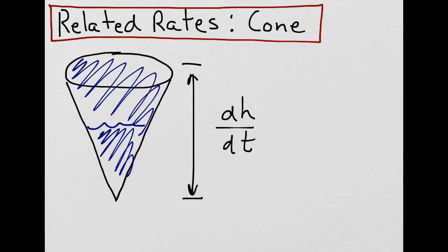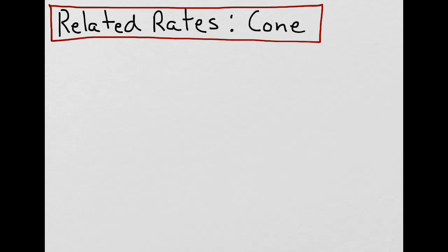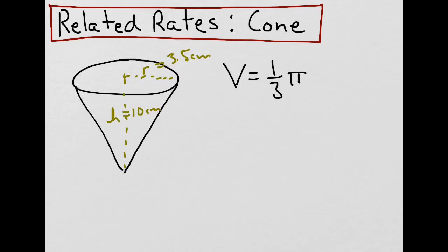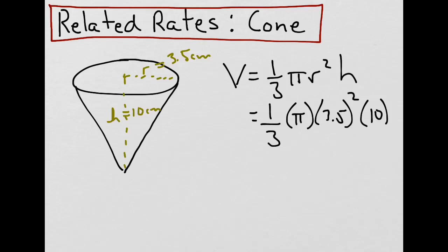To determine this we could do a little hands-on activity. We could take a drinking cup from a water cooler, which is in the shape of a cone, and measure its height and radius. Let's say we found that the radius was 3.5 cm and the height was 10 cm. We could then use the formula for the volume of a cone, which is 1/3 π r² h, and plug in our values. So that gives us π times 3.5 squared times 10, which is about 128 cm³.